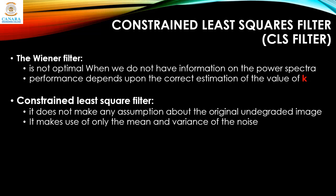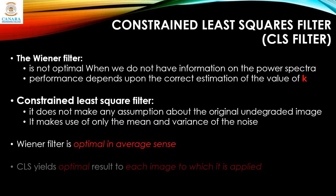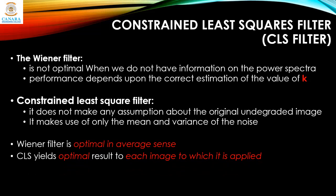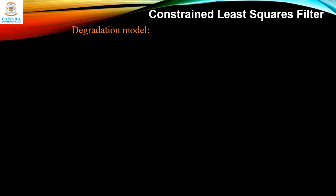To summarize the difference between the CLS and the Wiener filter: the Wiener filter is optimal in an average sense, meaning it becomes optimal when we consider all kinds of scenarios. But the CLS yields optimal results suitable to each individual image to which it is applied. So the main takeaway is that the Wiener filter is optimized for the average case, but CLS yields optimal results for each individual case.